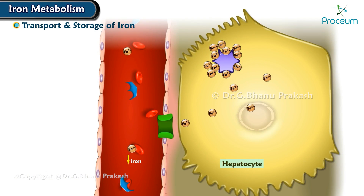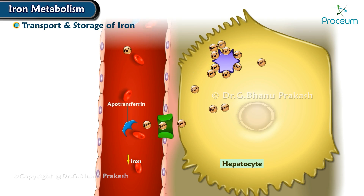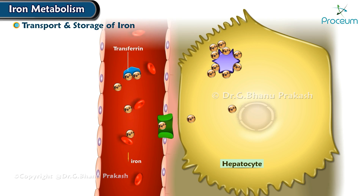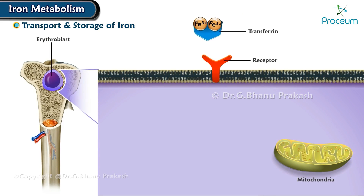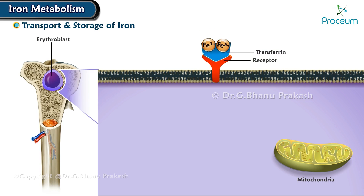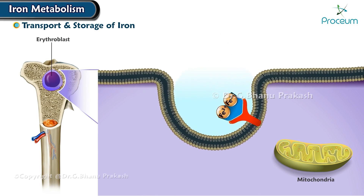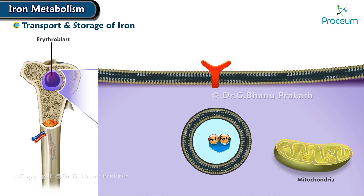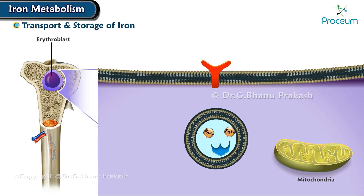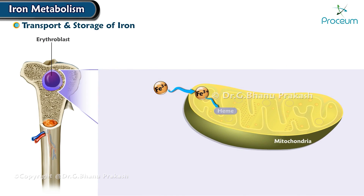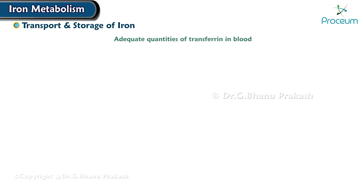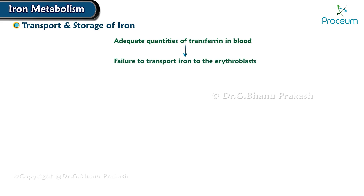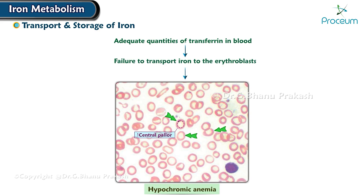When the quantity of iron in the plasma falls low, some of the iron in the ferritin storage pool is removed easily and transported in the form of transferrin in the plasma to the areas of the body where it's needed. A unique characteristic of the transferrin molecule is that it binds strongly with receptors in the cell membranes of erythroblasts in the bone marrow. Along with its bound iron, it's ingested into the erythroblasts by endocytosis, where the transferrin delivers the iron directly to the mitochondria where heme is synthesized. In people who do not have adequate quantities of transferrin in their blood, failure to transport iron to the erythroblasts can cause severe hypochromic anemia — that is, red cells that contain much less hemoglobin than normal.